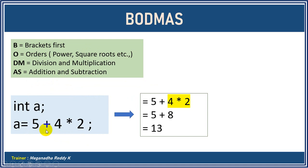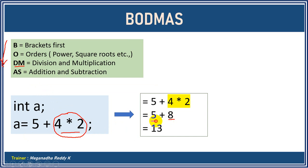In our expression we have addition and multiplication. As per BODMAS, since we don't have brackets or orders, importance has to be given to multiplication first. So 4 * 2 = 8 is computed first, and then addition is done, giving us 5 + 8 = 13.